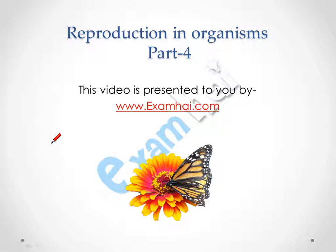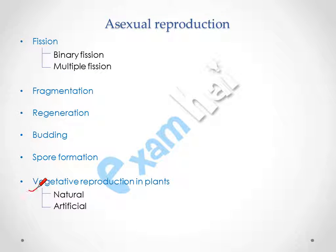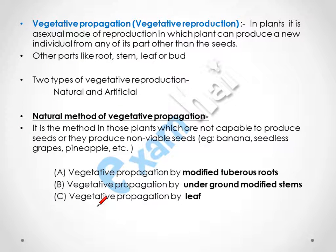Hello everyone, today we are going to discuss the topic of reproduction in organisms. This video is presented by www.examha.com. As we have discussed in our earlier videos, asexual reproduction includes fission, fragmentation, regeneration, budding, and spore formation. In this video, we are going to discuss vegetative reproduction in plants, covering natural and artificial vegetative reproduction. Vegetative reproduction is also called vegetative propagation.